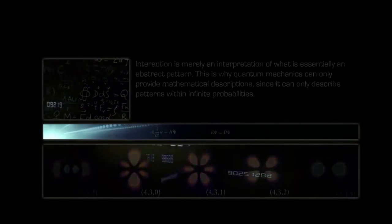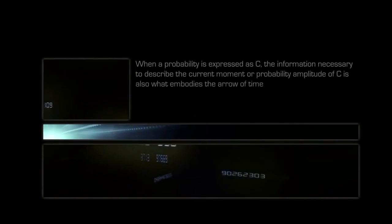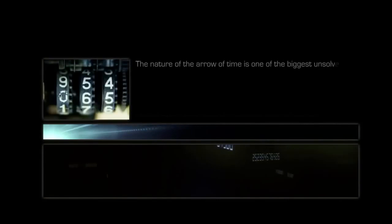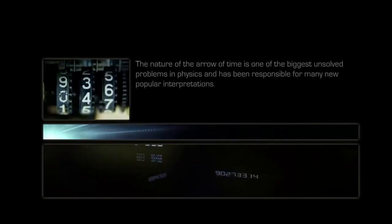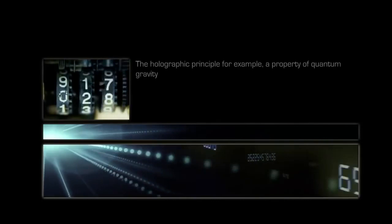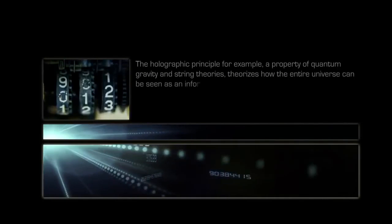When a probability is expressed as C, the information necessary to describe the current moment or probability amplitude of C, is also what embodies the arrow of time. The nature of the arrow of time is one of the biggest unsolved problems in physics, and has been responsible for many new popular interpretations. The holographic principle, for example, a property of quantum gravity and string theories, theorizes how the entire universe can be seen as an information structure of only two dimensions.